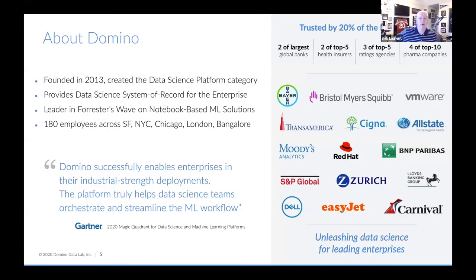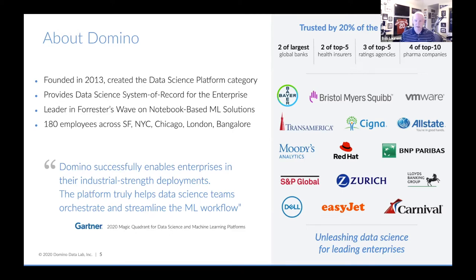A little bit about who Domino is before I get started. We've been around for about seven years. We created the data science platform category with our first product that we launched in 2014. We're a data science system of record for the enterprise — like salespeople living and breathing inside of Salesforce. We're fortunate to be deployed by 20% of the Fortune 100, including some of the largest banks in the world, health insurance companies, and pharma companies all around the globe.